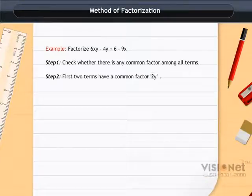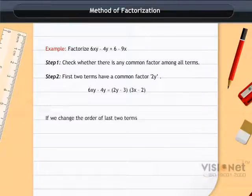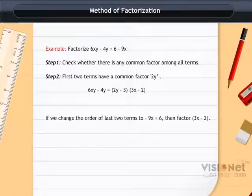First two terms have a common factor 2y. So, 6xy - 4y = 2y(3x - 2). If we change the order of last two terms to -9x + 6, then the factor (3x - 2) will come out.